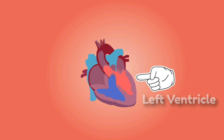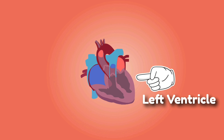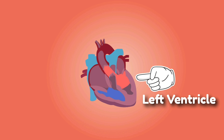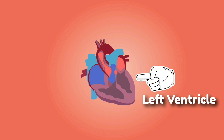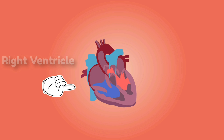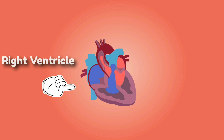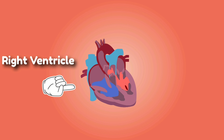The left ventricle is the thickest of the heart's chambers and is responsible for pumping oxygenated blood to tissues all over the body. The right ventricle pumps blood low in oxygen to the lungs.